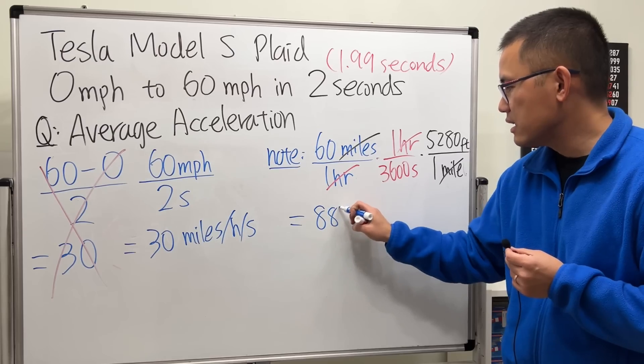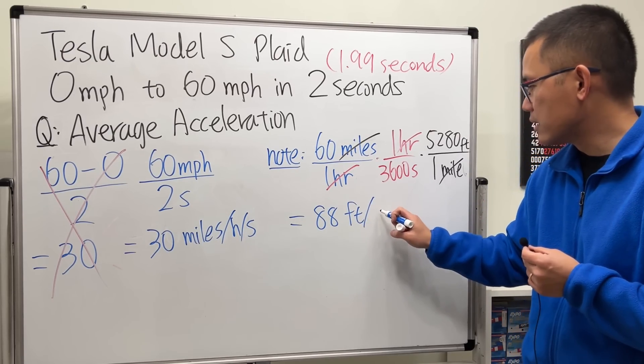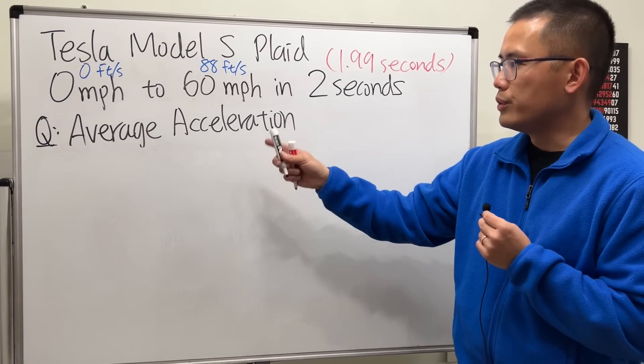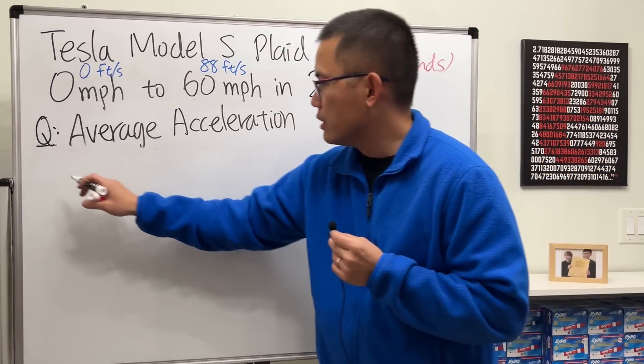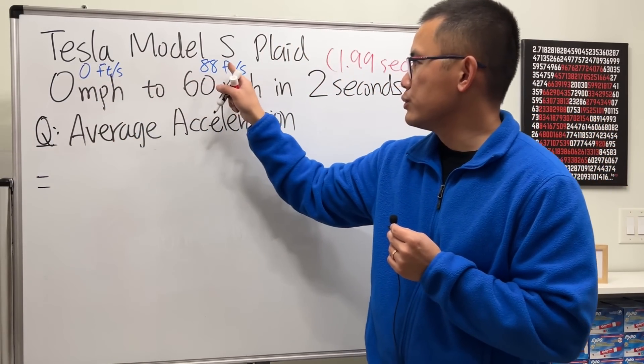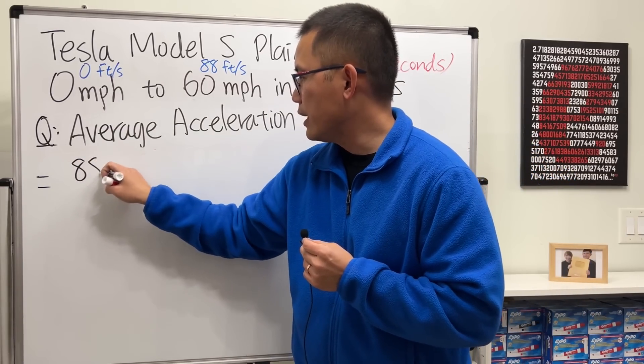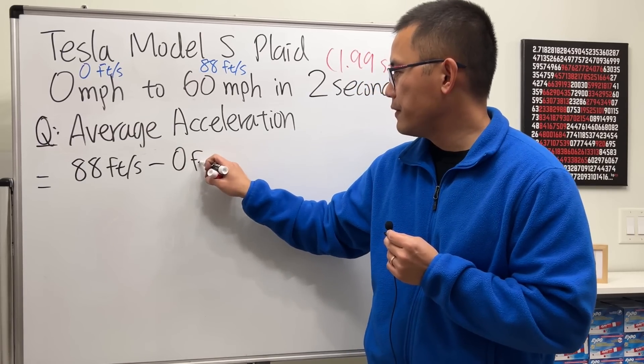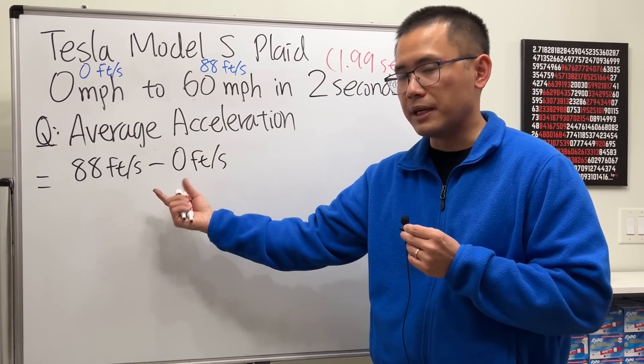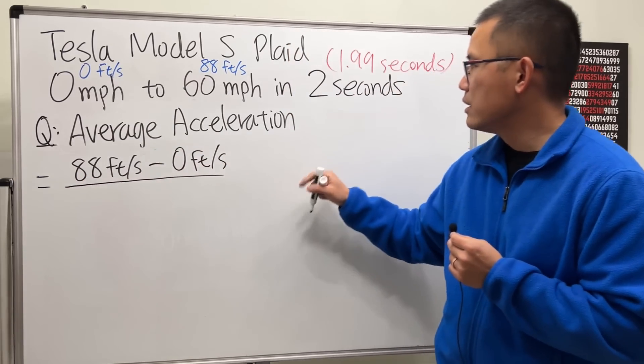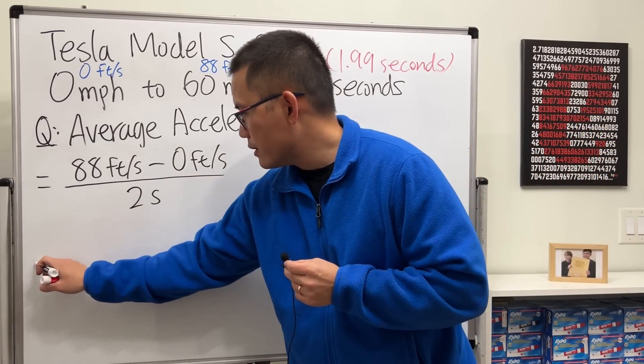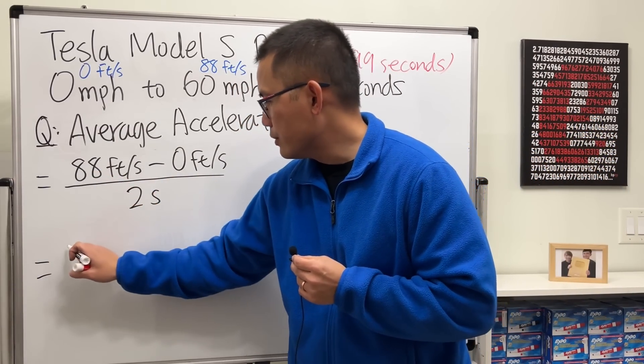All right, so now we are going to compute the average acceleration. So we go from zero feet per second to 88 feet per second. So we do 88 feet per second minus zero feet per second which of course doesn't matter, over two seconds. So now 88 divided by 2 is 44.